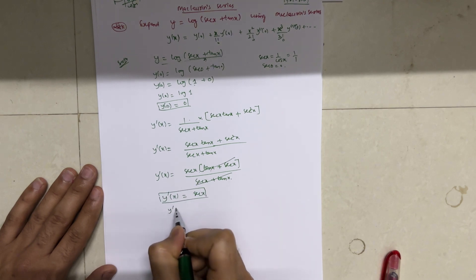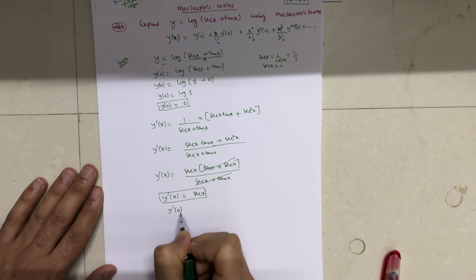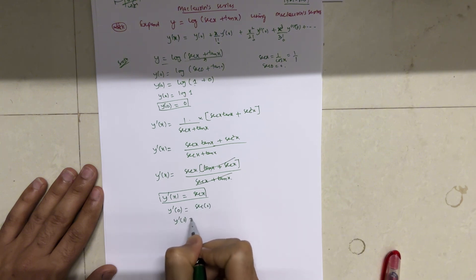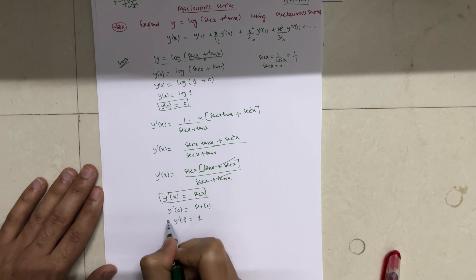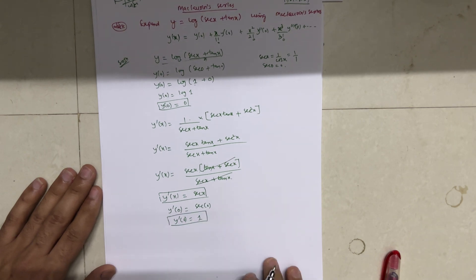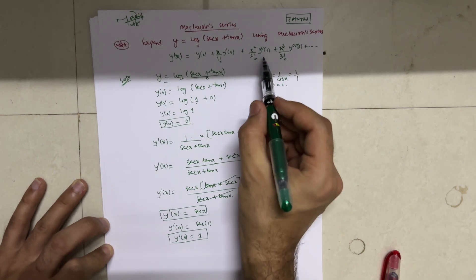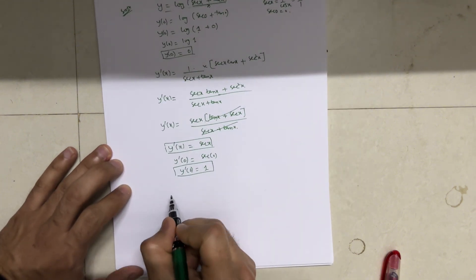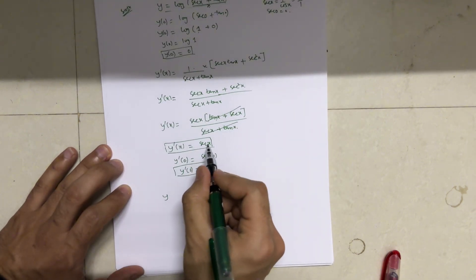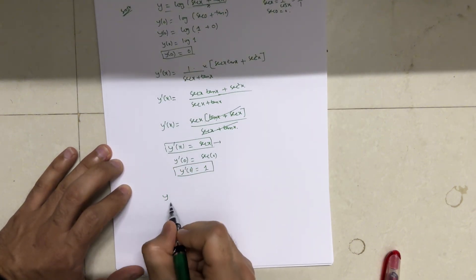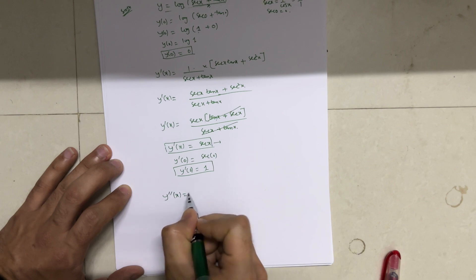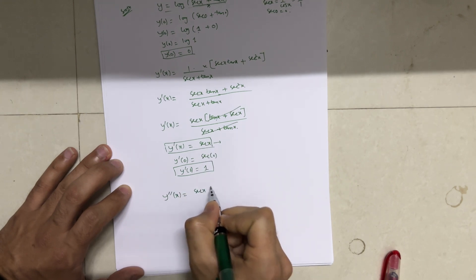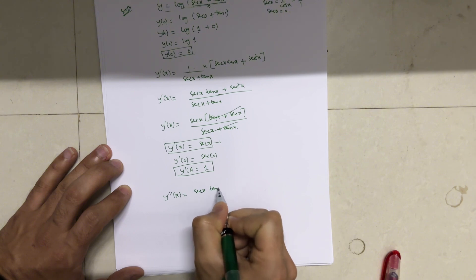Now check at x = 0: y'(0) = sec 0 = 1. So y'(0) = 1. Next, we calculate y''(0). Differentiating y'(x) = sec x again, the differentiation of sec x is sec x·tan x.